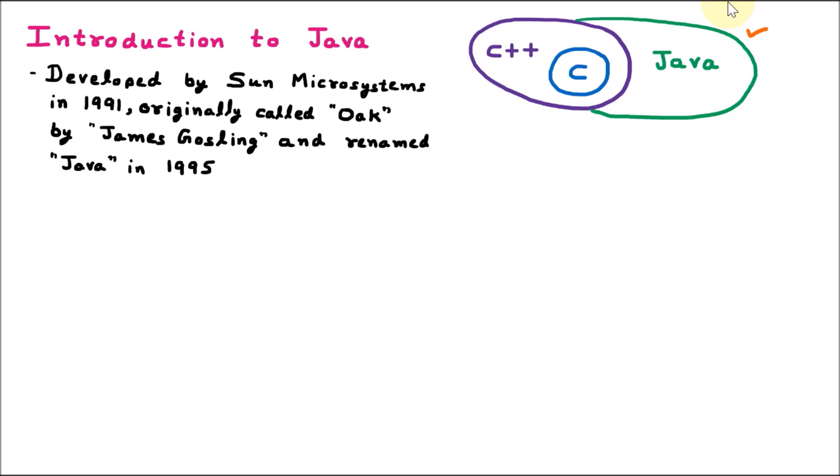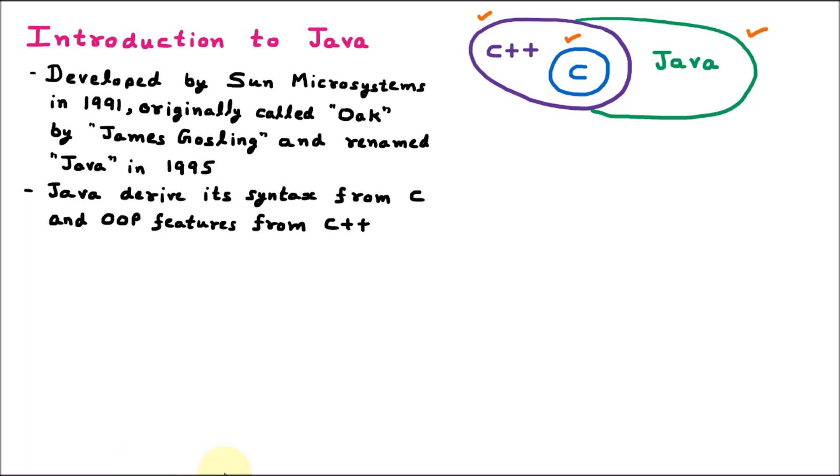Java is derived from two languages. The first language is C and the second one is C++. Java derives its syntax from C language, and Java also supports object-oriented programming. So Java derives its OOP features from C++. The syntax of Java is derived from C programming and the OOP features are taken from C++.